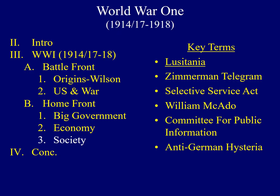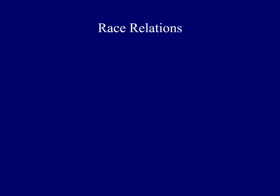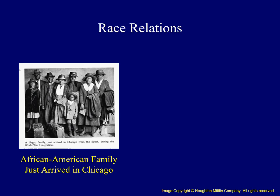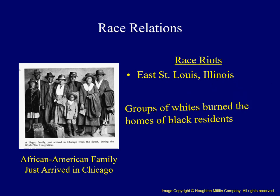World War I also impacted American society, particularly in the area of race relations. We see the first so-called Great Migration of African Americans to northern cities like Chicago, Detroit, and New York, as about a half a million blacks moved north in search of jobs. In some cases, this influx led to racial violence, best seen in events in East St. Louis, Illinois. Race riots developed there when white mobs torched the homes of several black residents; as people fled their burning homes, some were shot. In the end, over 300 buildings were destroyed, and at least 39 blacks and 9 whites lay dead.